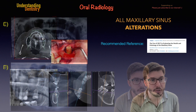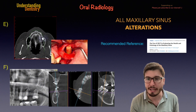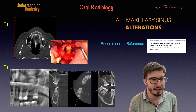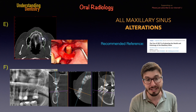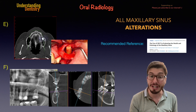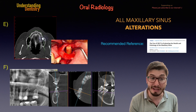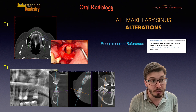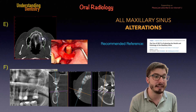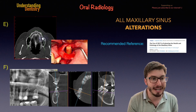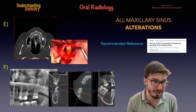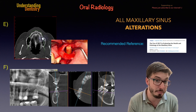All right, and just for us to finish, let's see two more cases. The foreign body of the letter E is being detected by this hyperdense image on the axial plane. The hyperdense image is on the left maxillary sinus. When I say hyperdense, I mean radiopaque — but that's 3D, that's CBCT, so we just say hyperdense.